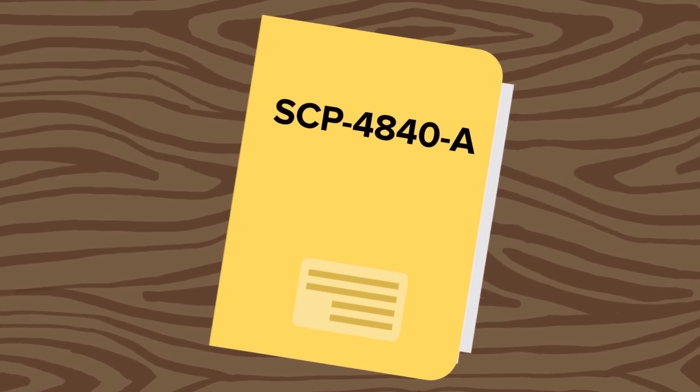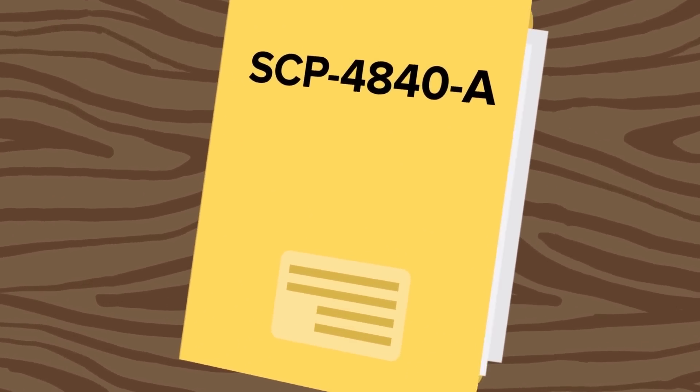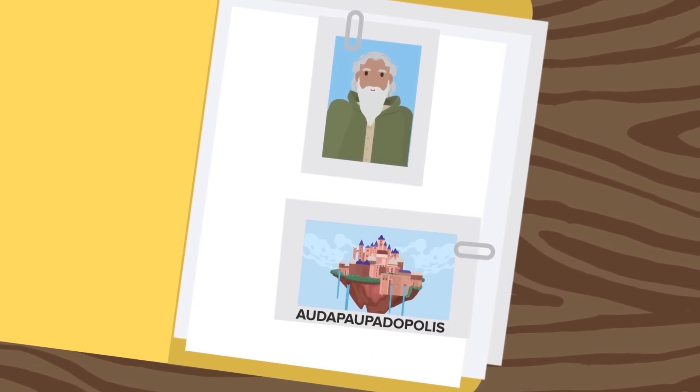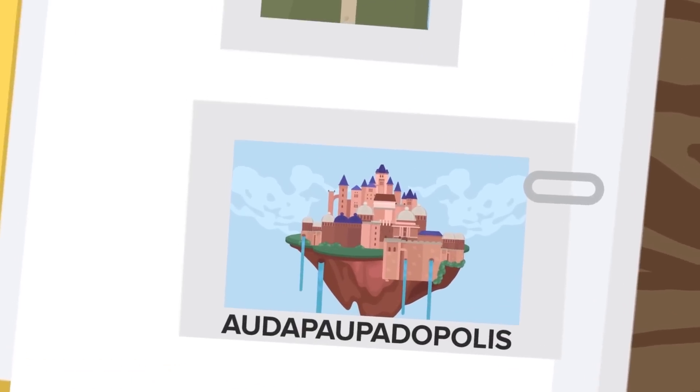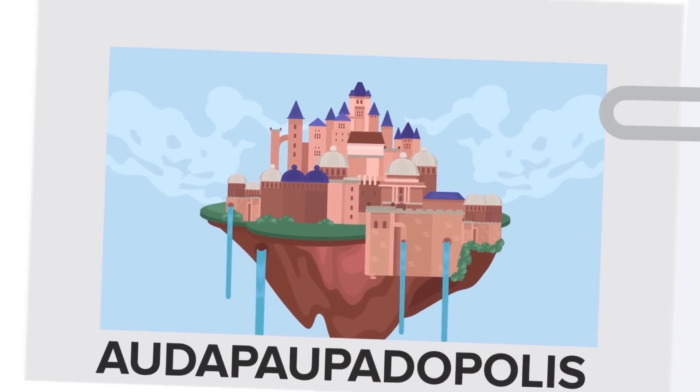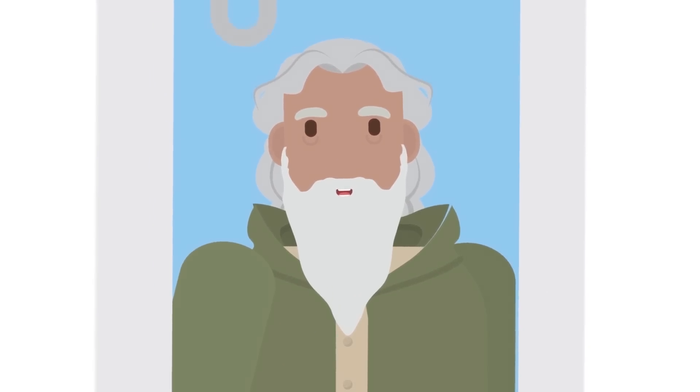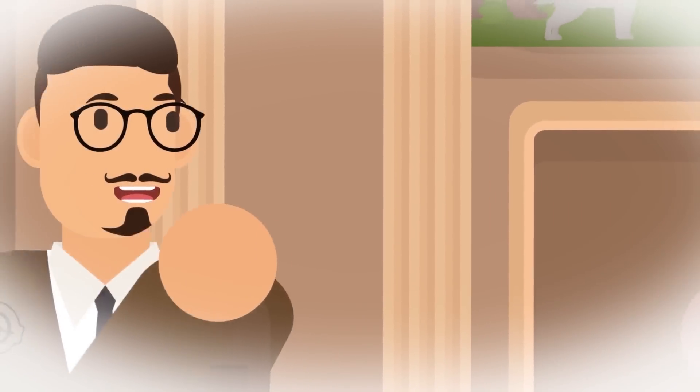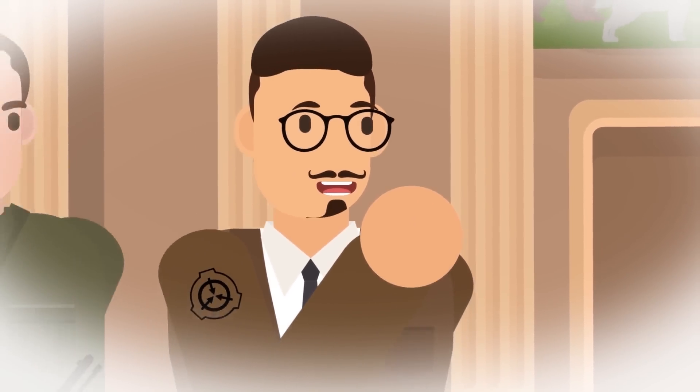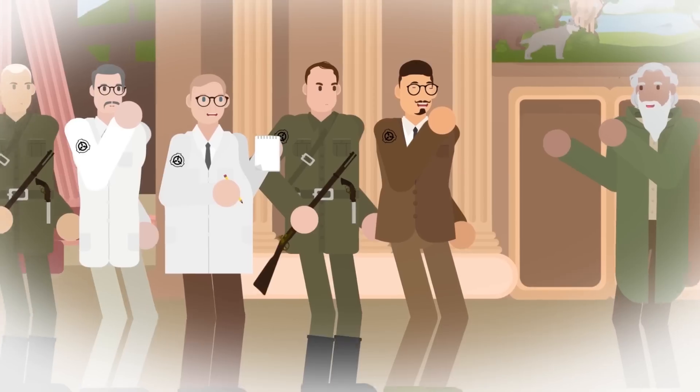The entity that is SCP-4840-A is an old man who calls himself the caretaker of the floating city of Autodopadopolis. He holds secrets that will change the Foundation's understanding of the world forever. The old man was initially encountered by Captain Francis Pike, who first explored Autodopadopolis for the Foundation.